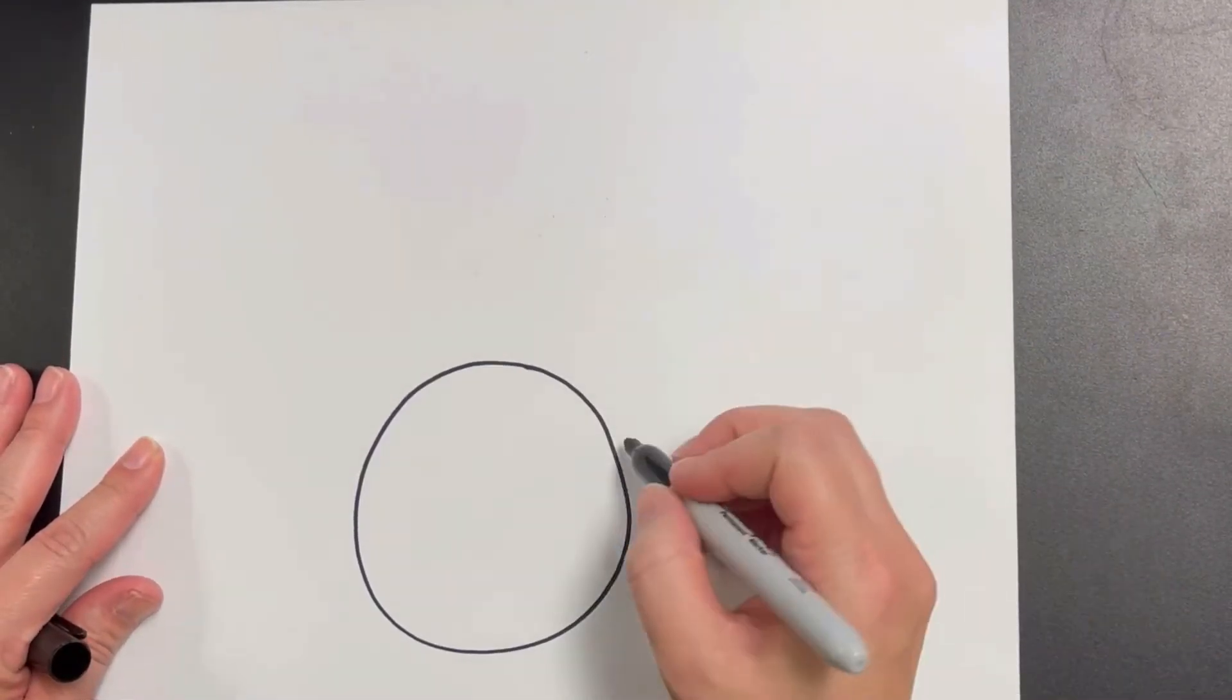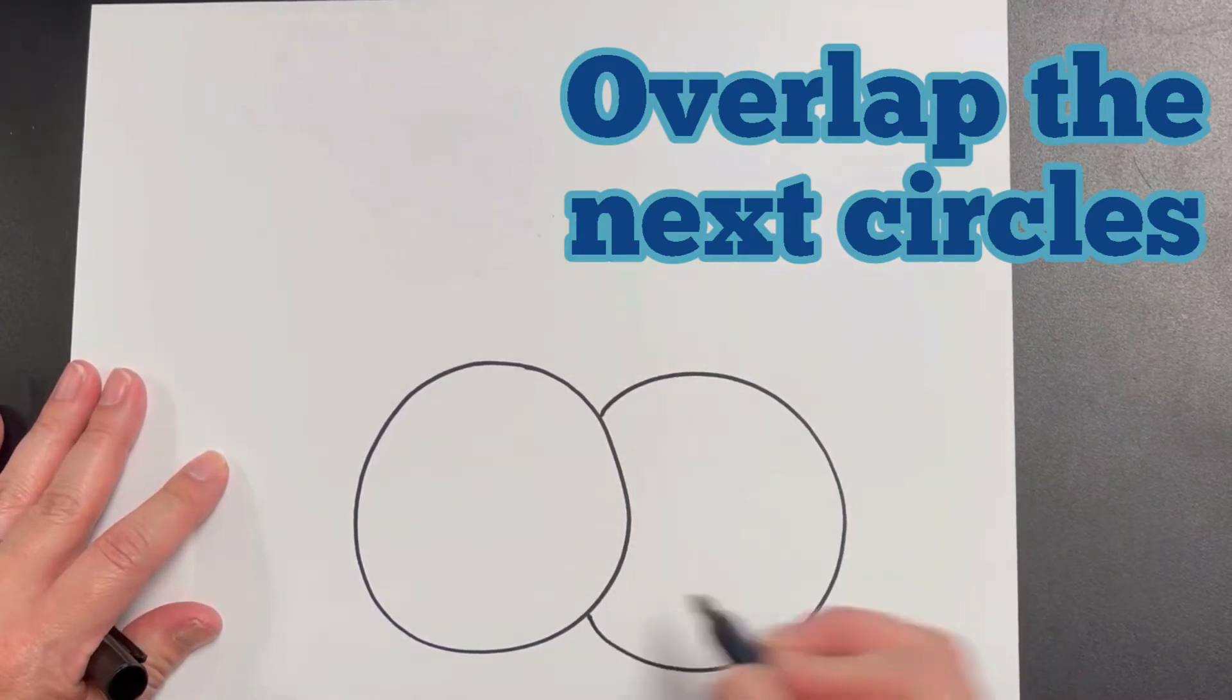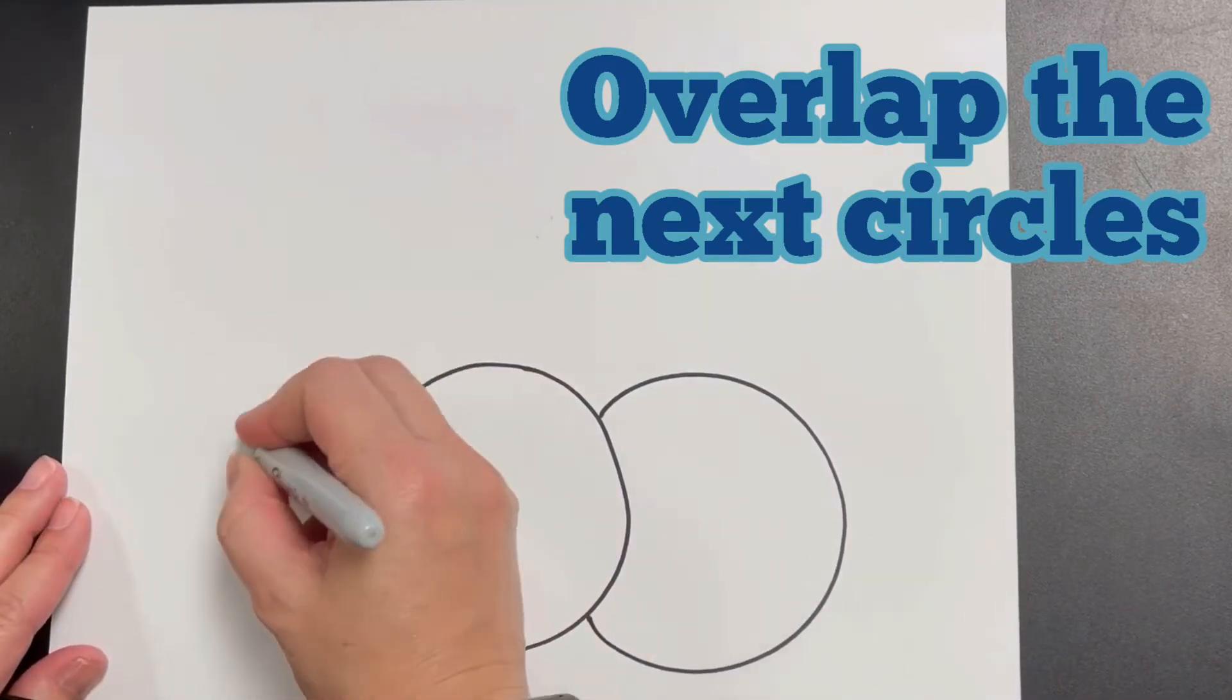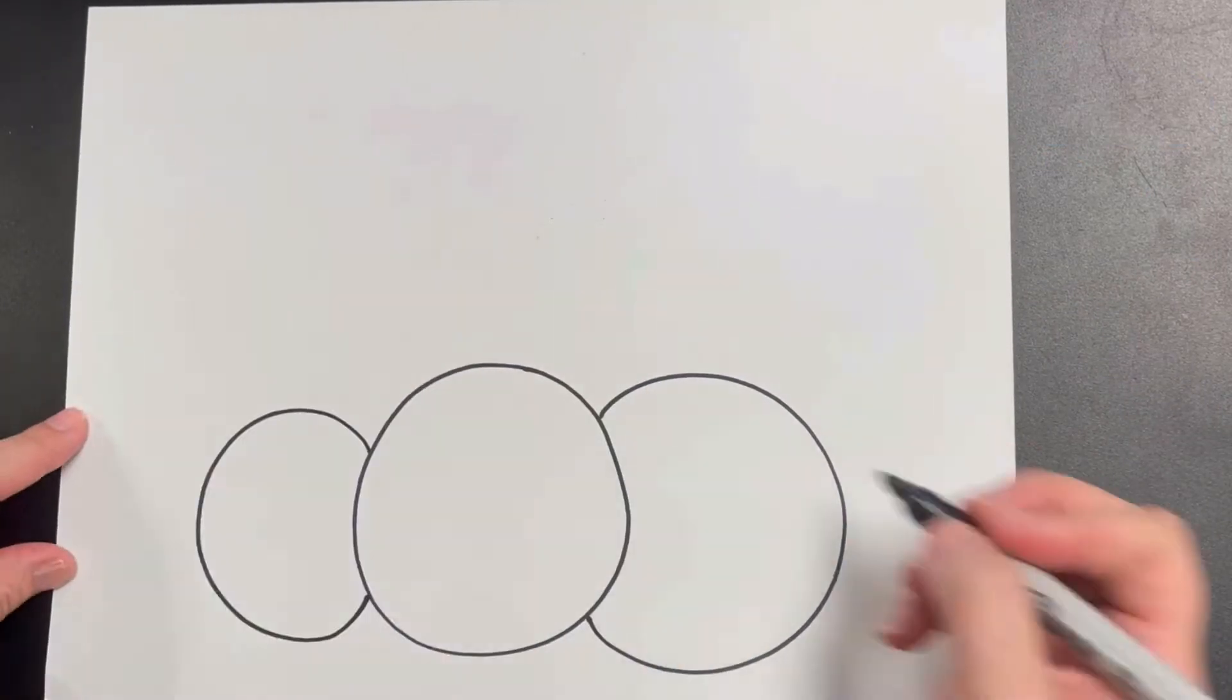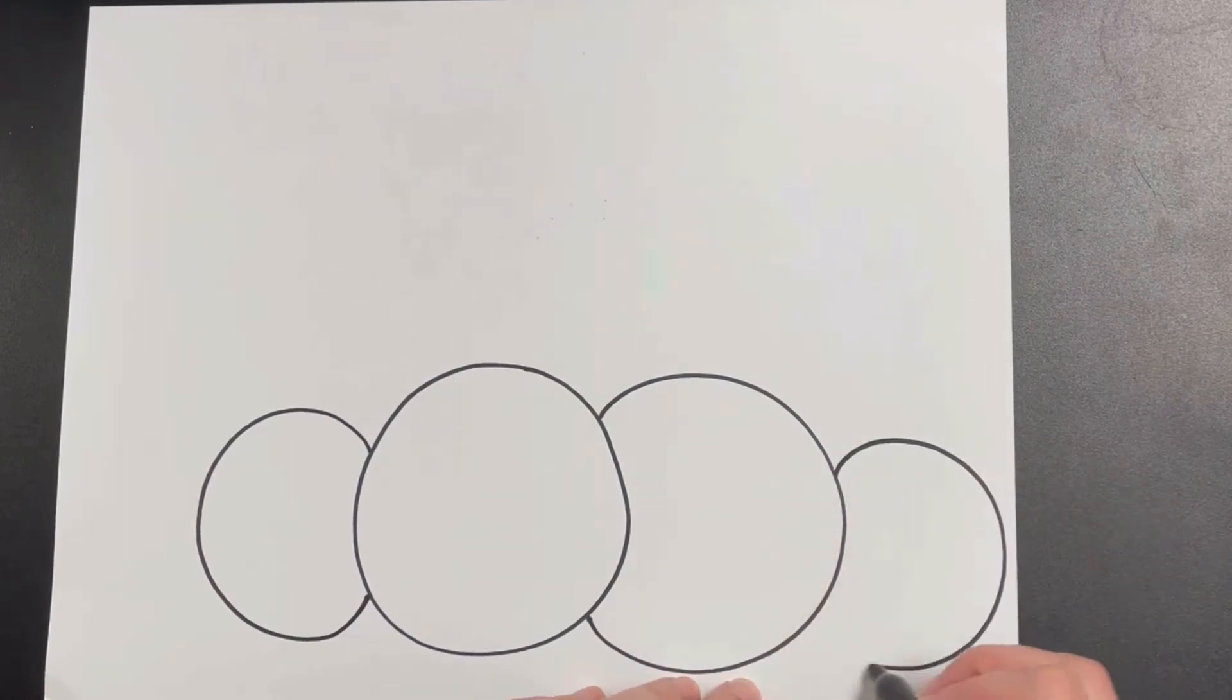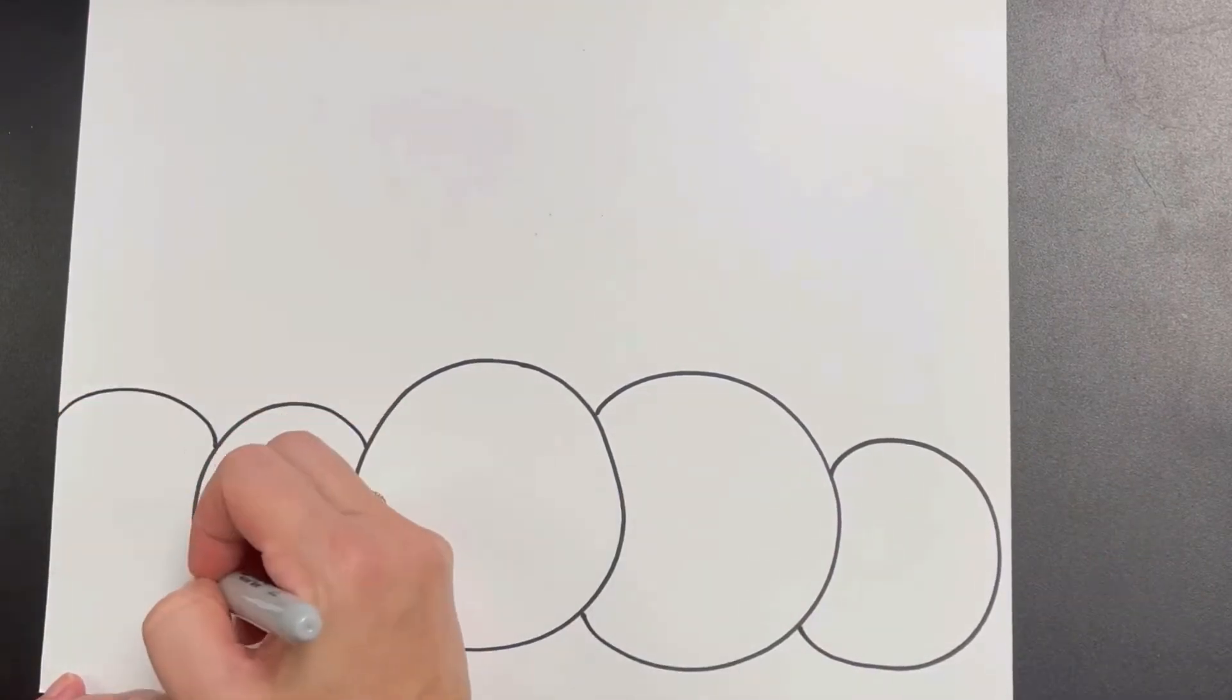Find the center bottom of your paper and draw one large circle. Then continue adding overlapping circles of a variety of sizes along the bottom edge. It's okay if it goes off the edge of the paper.